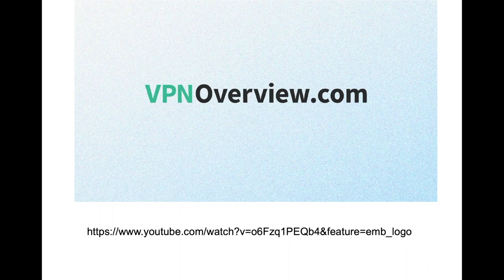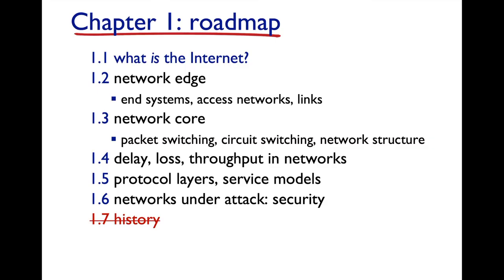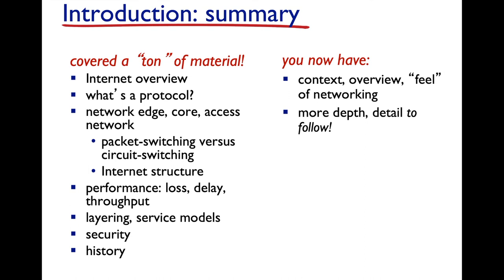You should take your privacy seriously. That completes everything we have to cover for all of Chapter 1. I will not hold you responsible for Internet history, though you're welcome to read it — it's fascinating. We covered a lot of information: the overview of the Internet, protocols, the different parts of the network — the edge, the core, the access network — packet switching, circuit switching, Internet structure, performance measurements of loss, delay, and throughput, layering and service models, and we ended with security.